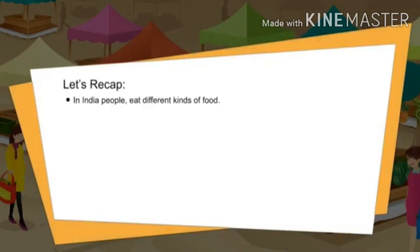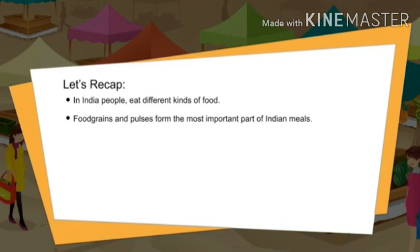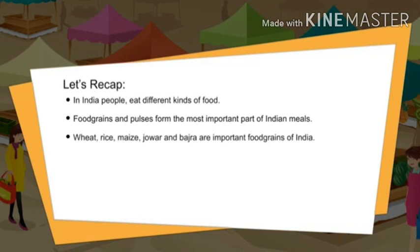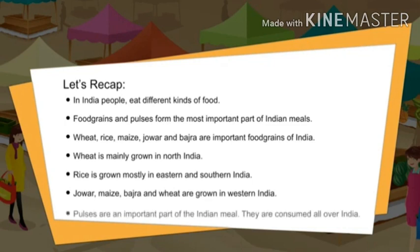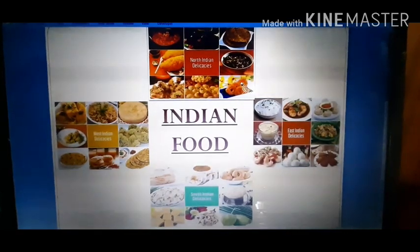Let's recap: In India, people eat different kinds of food. Food grains and pulses form the most important part of Indian meals. Wheat, rice, maize, jowar, and bajra are important food grains. Wheat is mainly grown in north India; rice in eastern and southern India; jowar, maize, bajra, and wheat in western India. Pulses are consumed all over India.